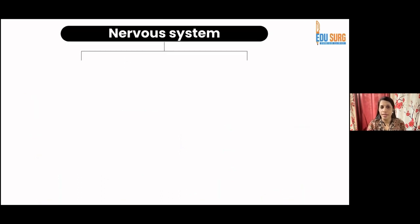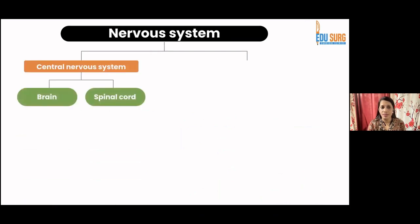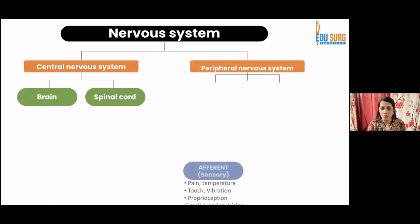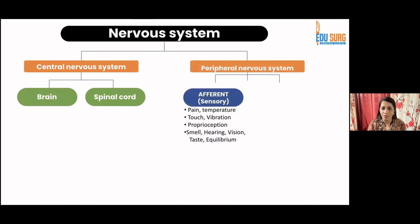Moving to the first section: the nervous system is divided into two components, the central and the peripheral nervous system. The central nervous system consists of the brain and spinal cord. The peripheral nervous system is further divided into the afferent or sensory component, which consists of pain, temperature, touch, vibration, proprioception, smell, hearing, vision, taste, and equilibrium. All these sensations are transmitted by the afferent or sensory root.